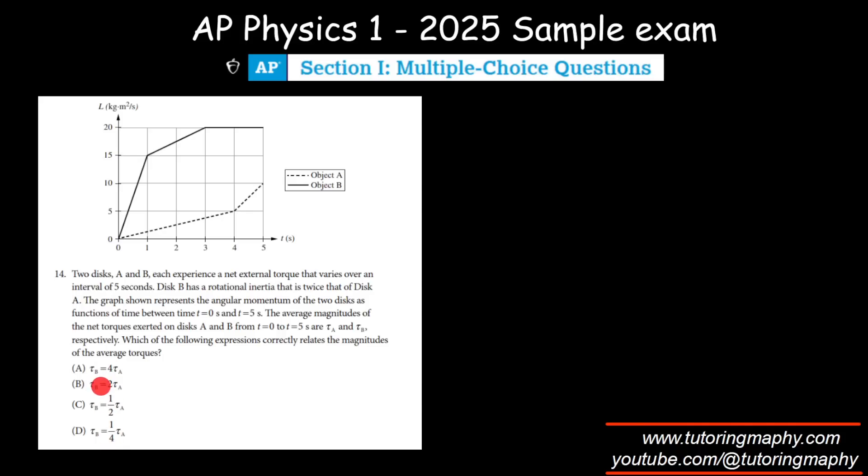Okay, now we know the relationship between torque, angular momentum, and time. The slope - because we know that torque is ΔL over Δt, right? So basically the slope of L versus t gives the torque.